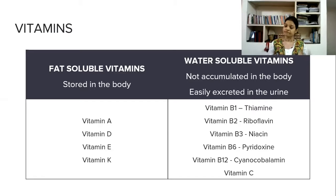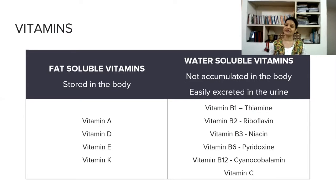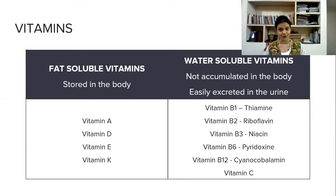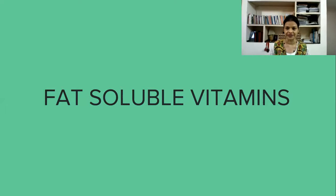Water soluble vitamins are vitamin B1, which is called thiamine; vitamin B2, riboflavin; vitamin B3, niacin; vitamin B6, pyridoxine; vitamin B12, cyanocobalamin; and vitamin C. You have to remember these chemical names — B1, B2, B3, B6, pyridoxine also. Now in this video we are covering only fat soluble vitamins, so you will not get confused with the water soluble vitamins.